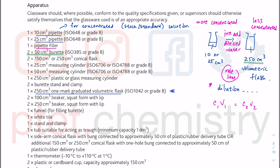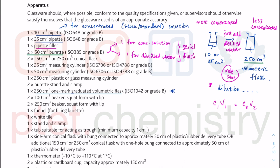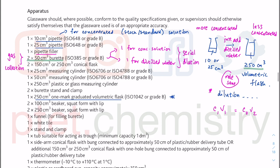Why do they give you two 50 cm³ burettes? Because in serial dilutions, one could be for the concentrated solution and one for the distilled water, adjusting the volume of solution and water while keeping the total volume constant. That is the idea in serial dilutions — for rate of reaction questions. Another use for two burettes is gas collection: an inverted burette in a water trough allows you to collect gas volume more accurately.